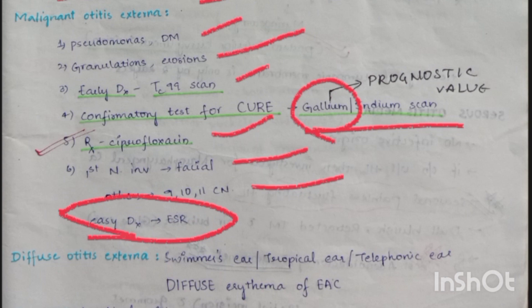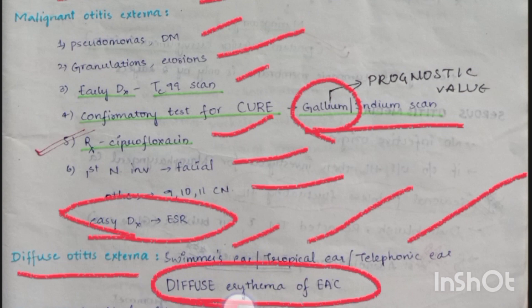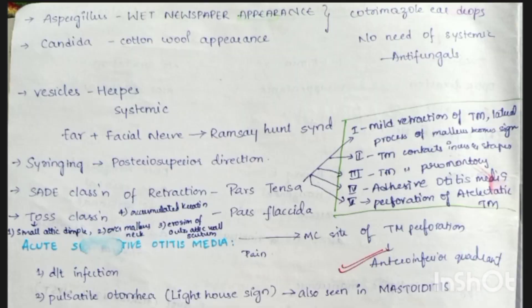Diffuse otitis externa is also known as swimmer's ear, tropical ear, or telephonic ear — diffuse erythema of the external auditory canal is seen. A furuncle is localized otitis externa; pain is present with jaw movement and the tragus sign is positive. Aspergillus shows wet newspaper appearance; Candida shows cotton wool appearance.